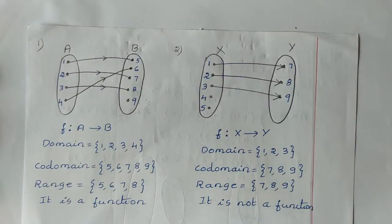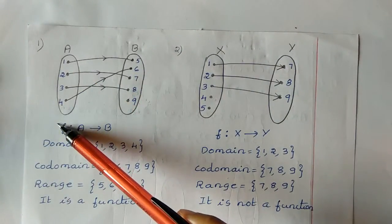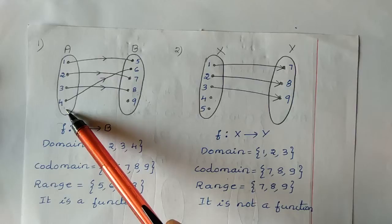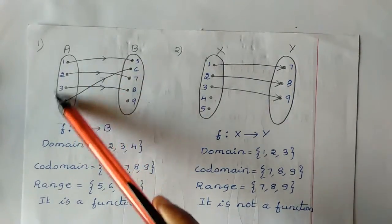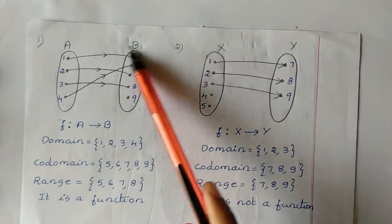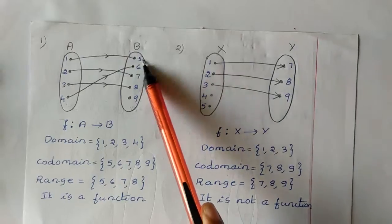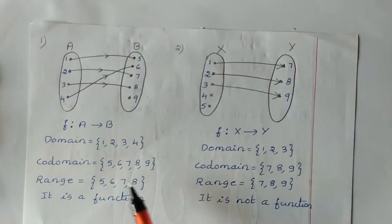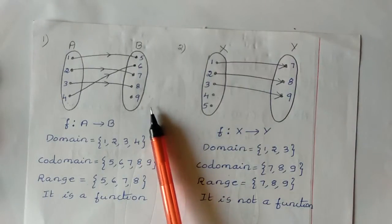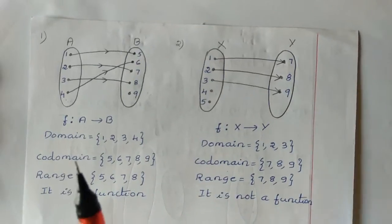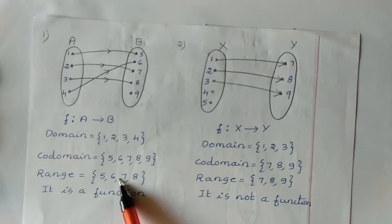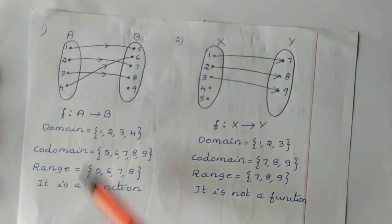Now let us find the domain, co-domain and range. The domain is the set of elements in the first set that participated in the mapping: {1, 2, 3, 4}. The co-domain is all elements of the second set: {5, 6, 7, 8, 9}. The range is all elements of the second set involved in mapping: {5, 6, 7, 8} — note that 9 is not included. So this is a function.